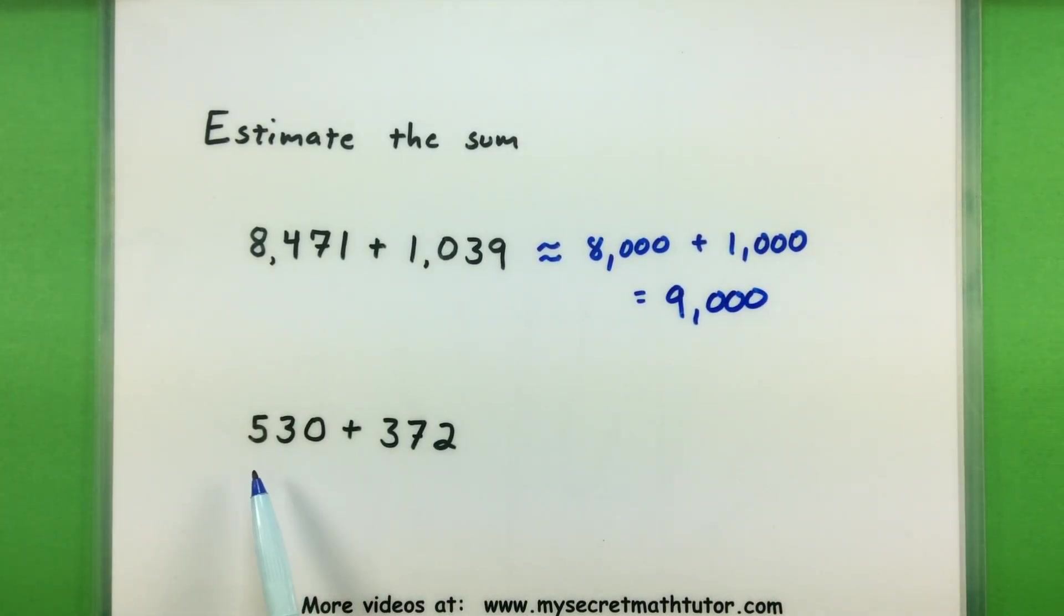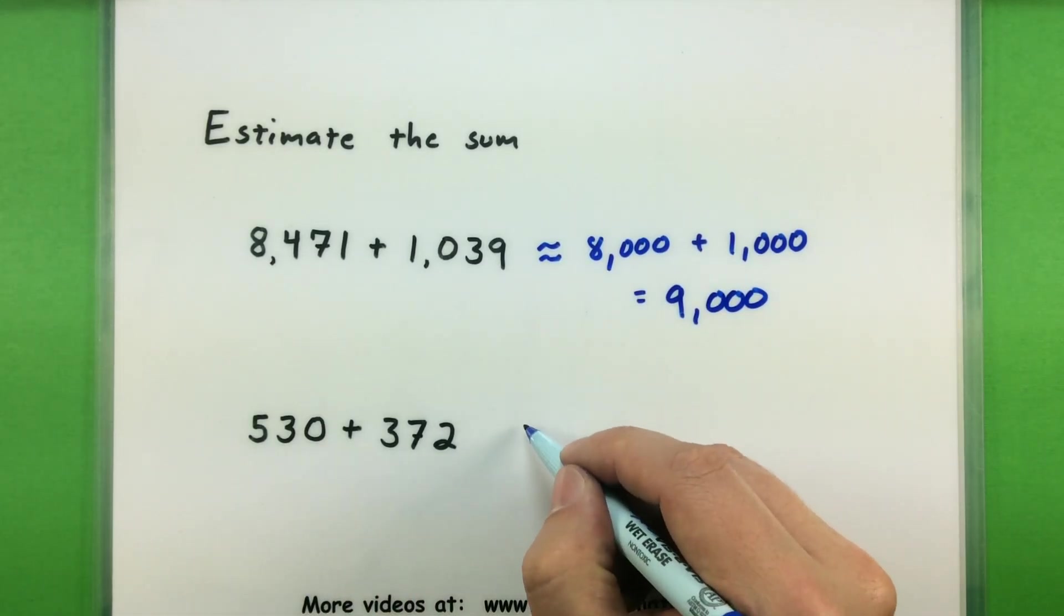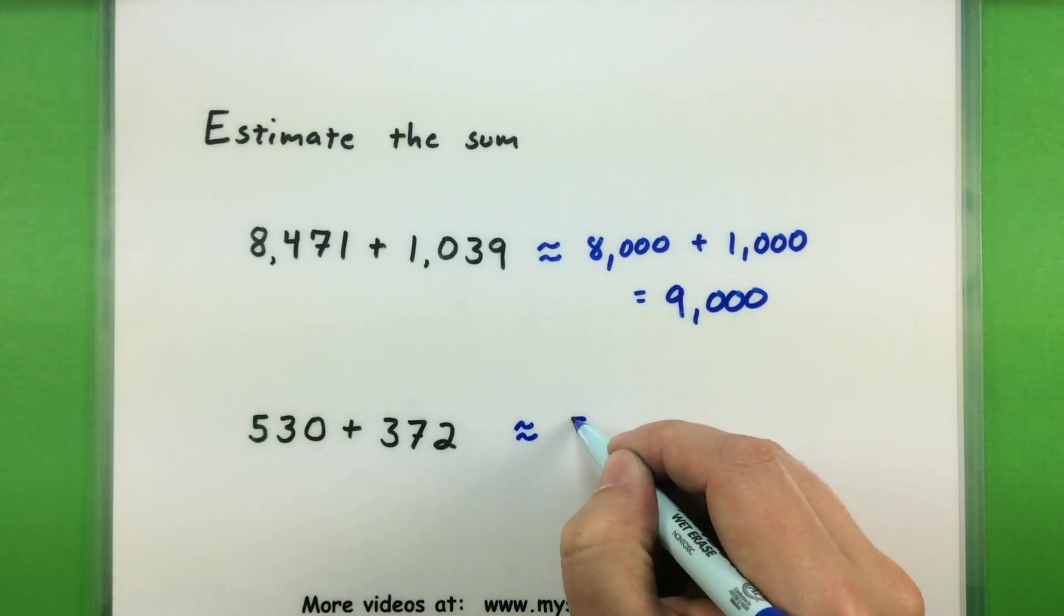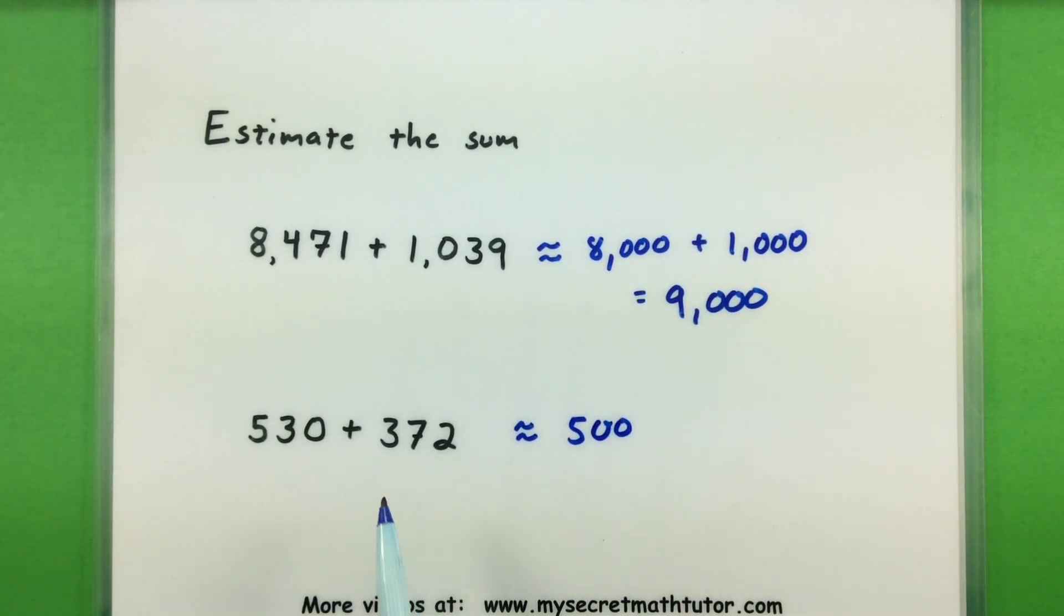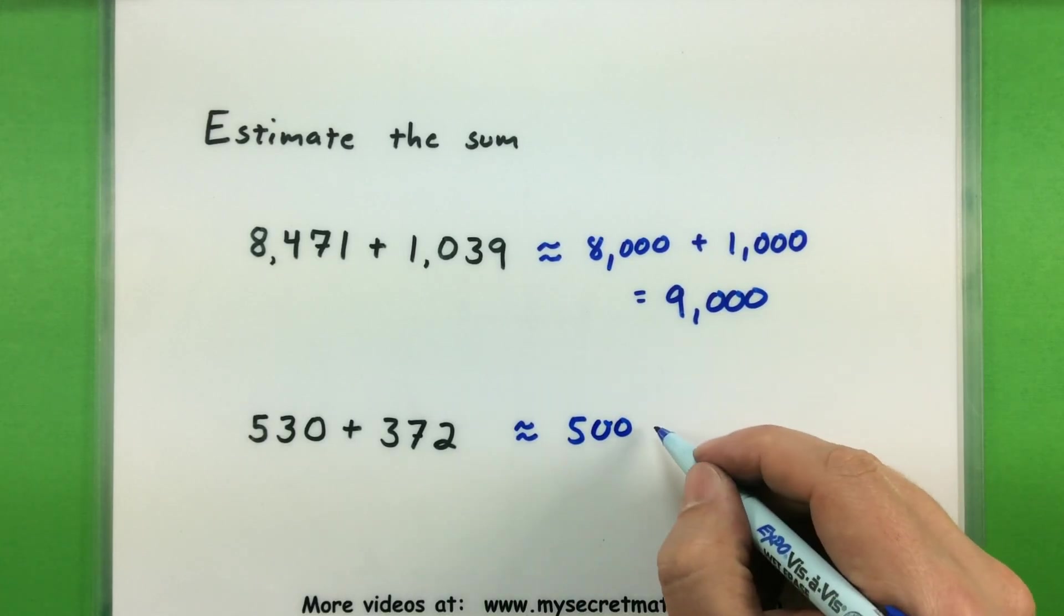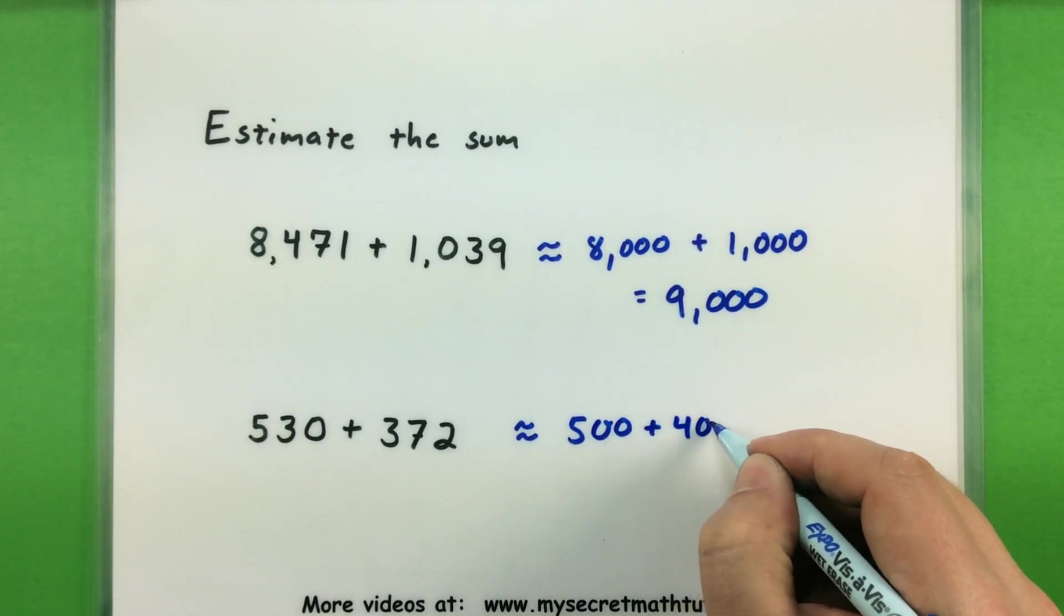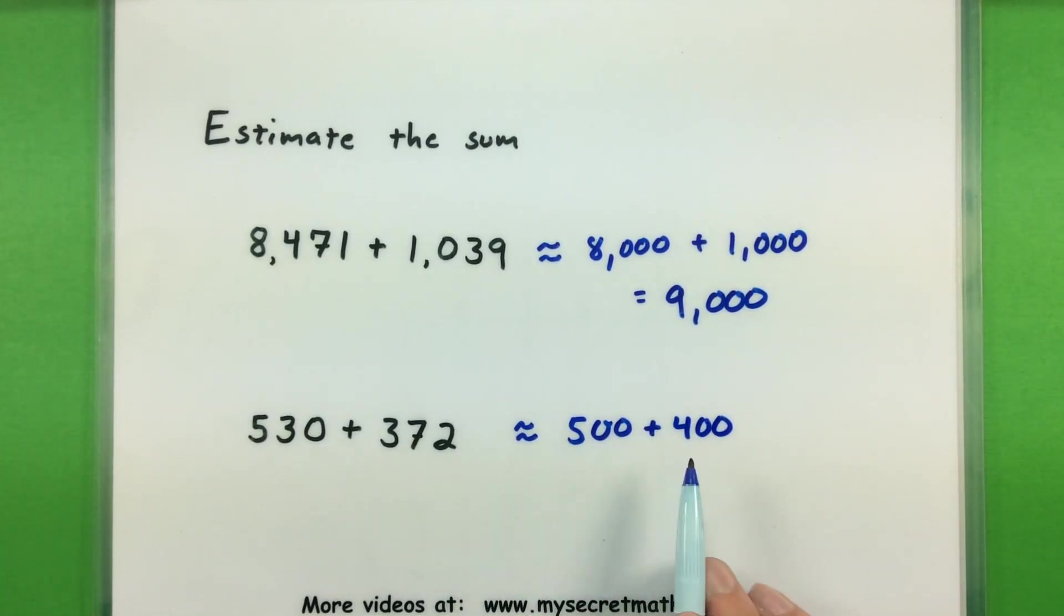Alright, next one. We'll take the five. That gets rounded down to 500. And the three, since the seven is right next to it, we'll get rounded up to 400. Alright, so now we'll add the five and the four. This will turn into 900.